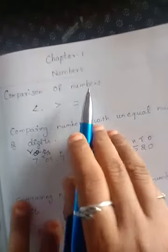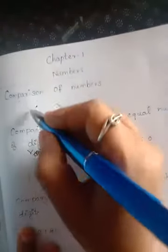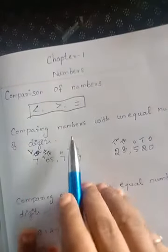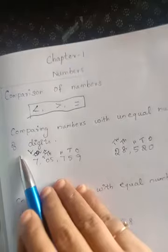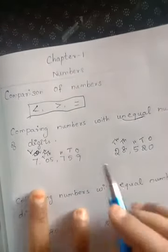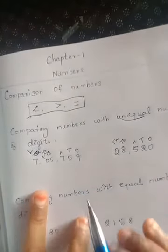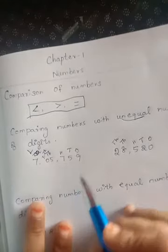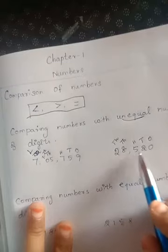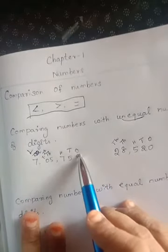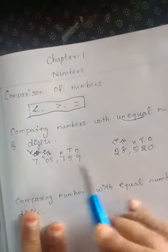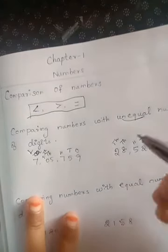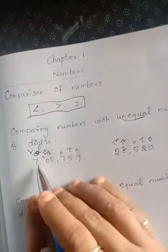Comparison of numbers - from the lower class we are learning this. Comparing numbers with unequal number of digits: see both the sides, just see how many digits are there - one two three four five and six on this side, and one two three four five on this side. I have written the place value also for your reference. Now see, which side we will be putting the greater than symbol? The number which has more digits.